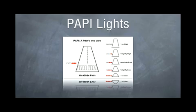Two white and two red are on your glide path, and all red, you're too low.